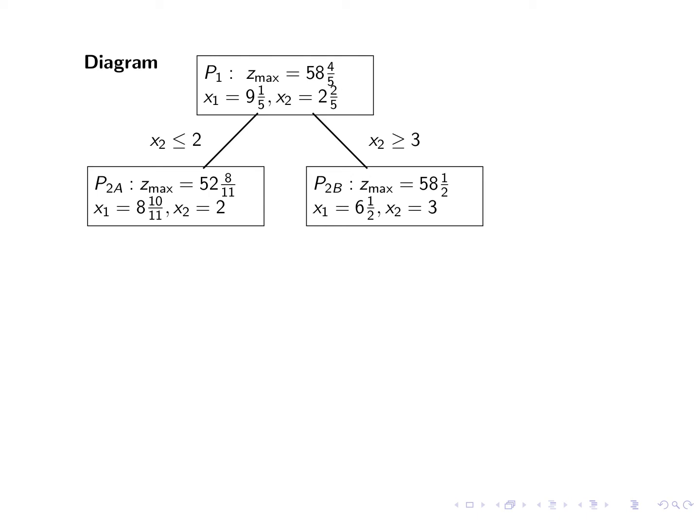So let's analyze a little bit and see if we can find any bound. So here we can see that since this Z max is 58 and a half, then we know if we add integral constraint, the largest integral less than that is 58. That's the maximum where the Z max can reach. So we know Z max has to be less than or equal to 58. So this is the bound we obtain. And now since 2B has a bigger Z max value, we're going to branch out from here.